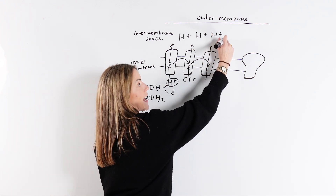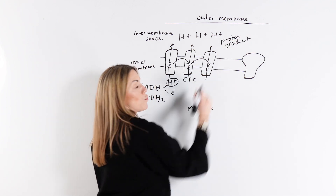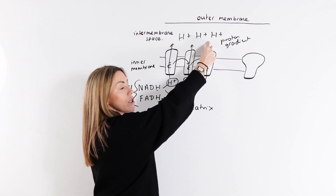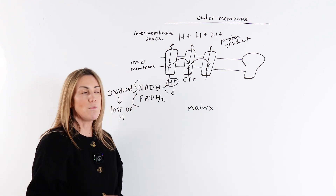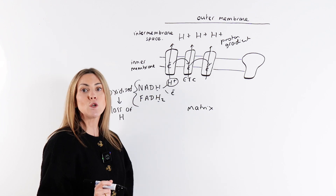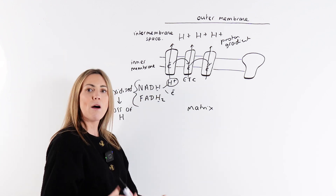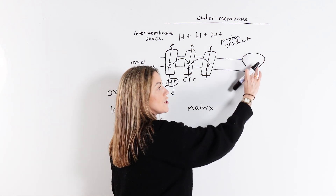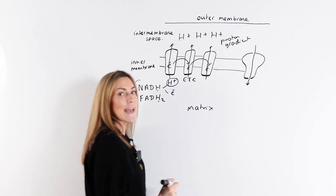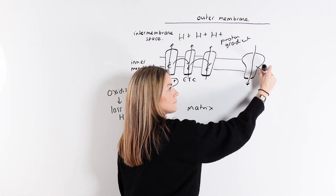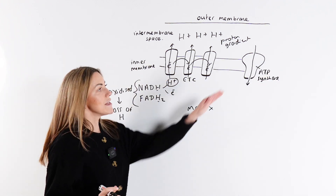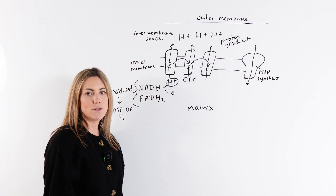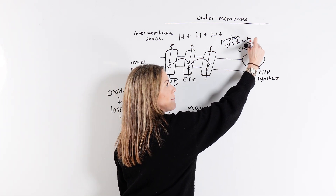What you've now got is a proton gradient, which we can also call an electrochemical gradient. There is a much higher concentration of protons in the intermembrane space than in the matrix. The protons will start to diffuse down that electrochemical gradient, and they can't diffuse through the phospholipid bilayer — the only way they can get through is to diffuse through a channel in the ATP synthase enzyme, which is embedded in that inner mitochondrial membrane.